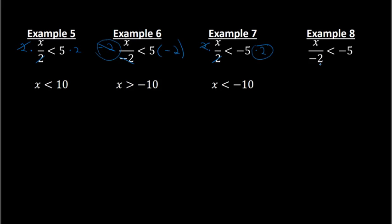Example 8: we have x divided by negative 2 is less than negative 5. To get rid of the negative 2 in the bottom, I need to multiply both sides by negative 2. On the left side the negative 2s cancel, so I have x on the left. Then negative 5 times negative 2 is a positive 10 on the right. And because I'm multiplying by this negative 2, that is when I switch the inequality from less than to greater than. My answer is x is greater than 10.